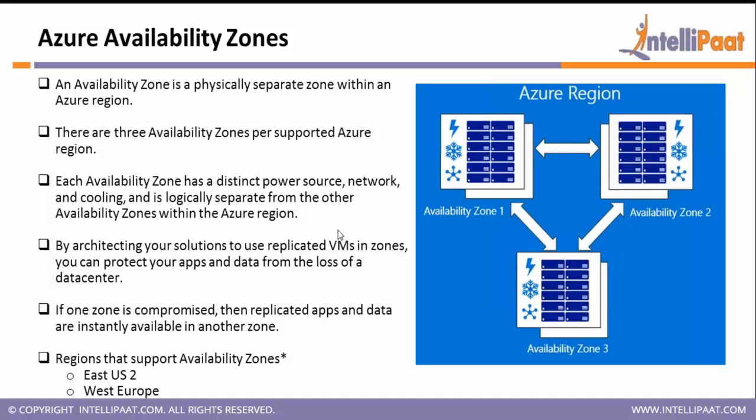For availability zones: assume they have one data center in Mumbai. They have created another data center in Mumbai but quite far apart — one is in south Mumbai, another is in west Mumbai, both are different. So if there is a problem at a city level in one of the data centers, you can still access your services from the other available data center.